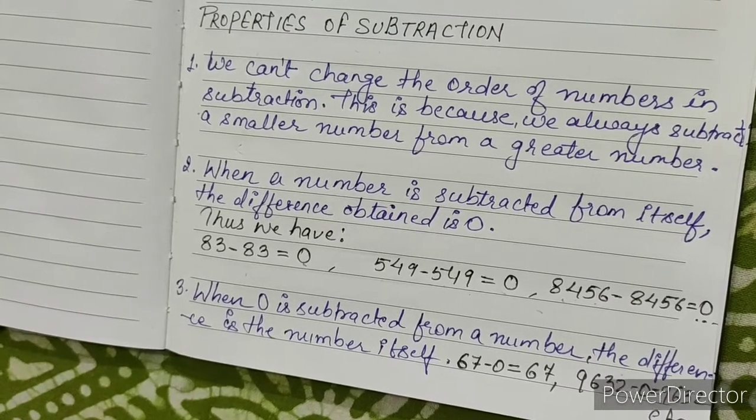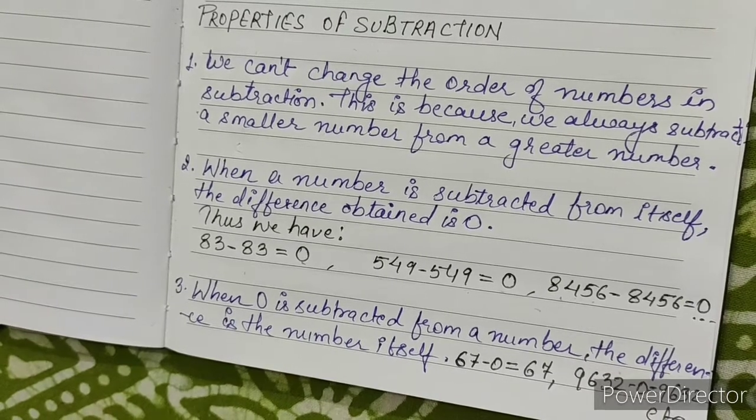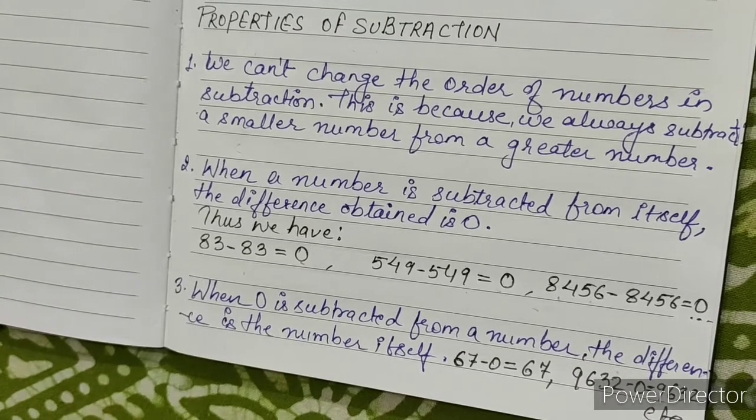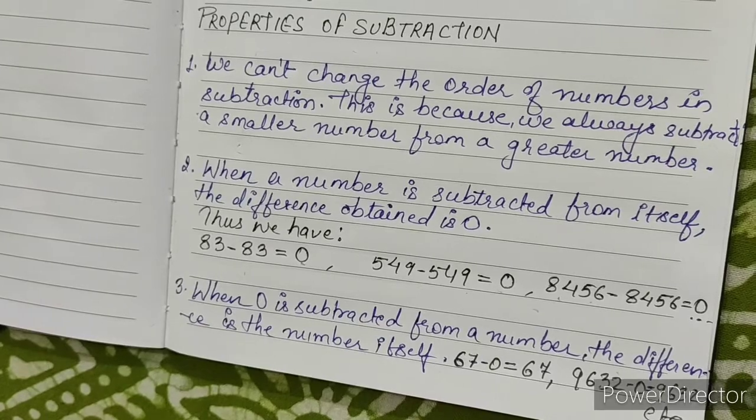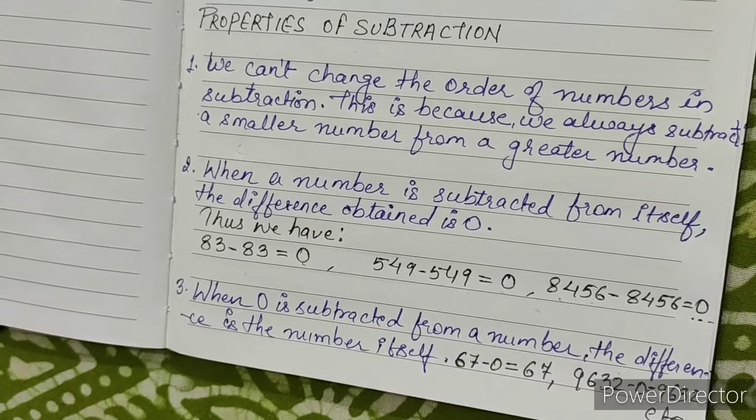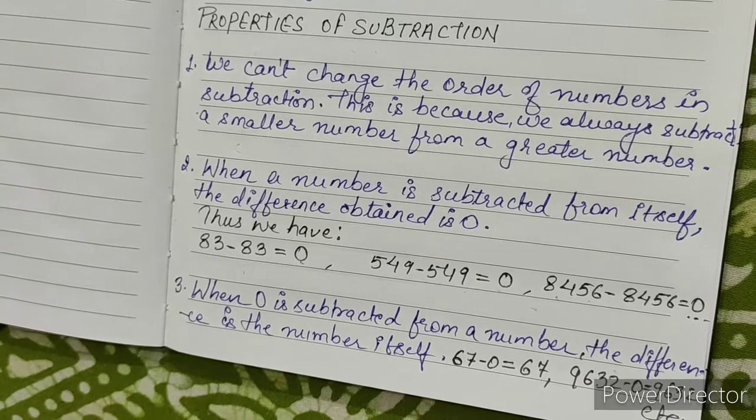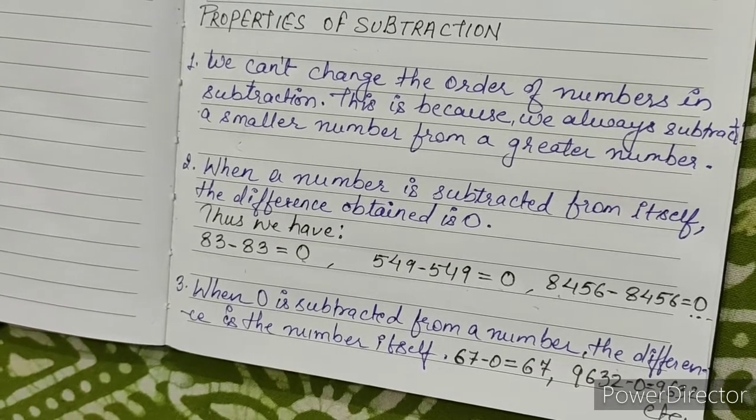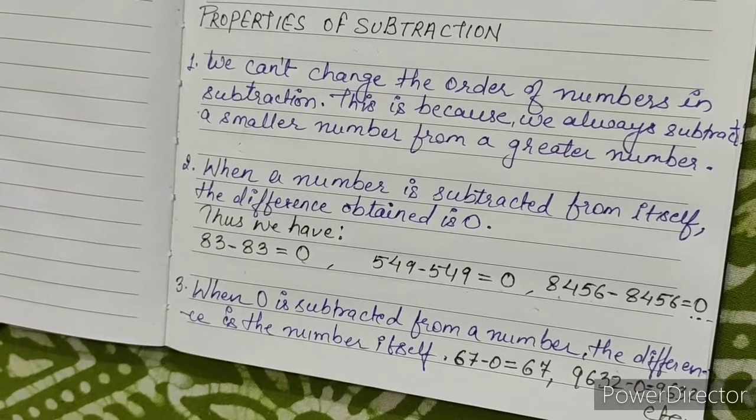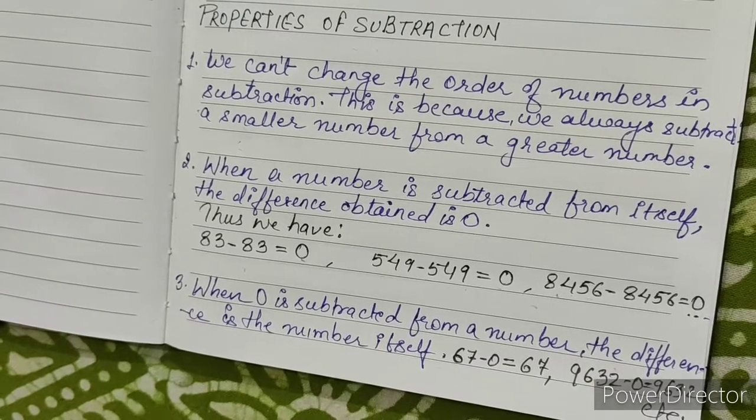Property 3: When 0 is subtracted from a number, the difference is the number itself. For example, 67 minus 0 equals 67, and 9632 minus 0 is 9632.